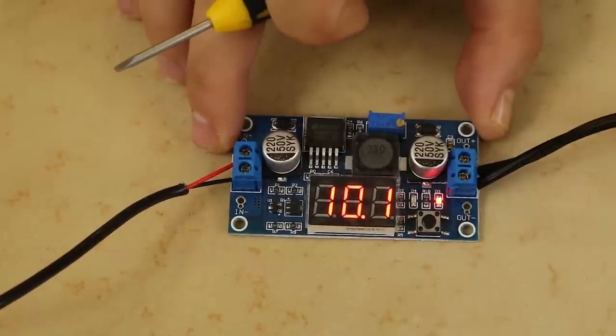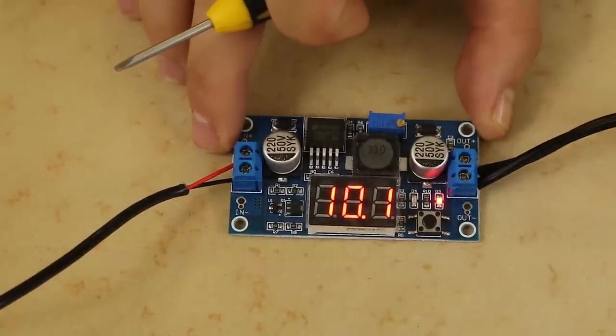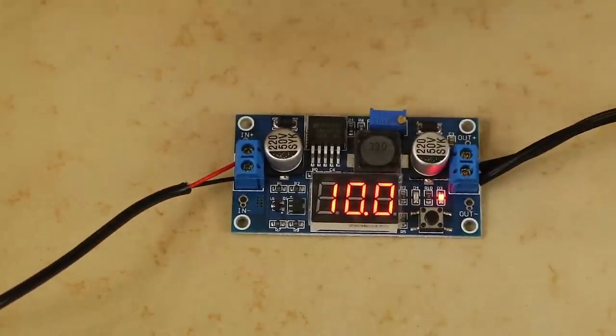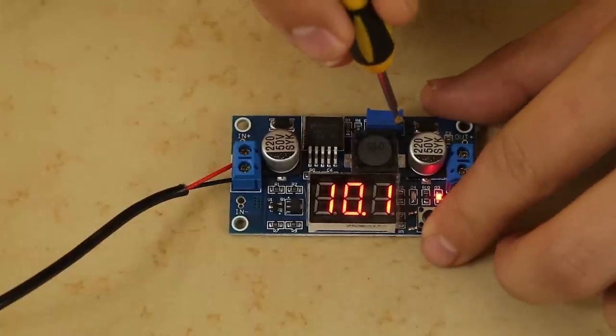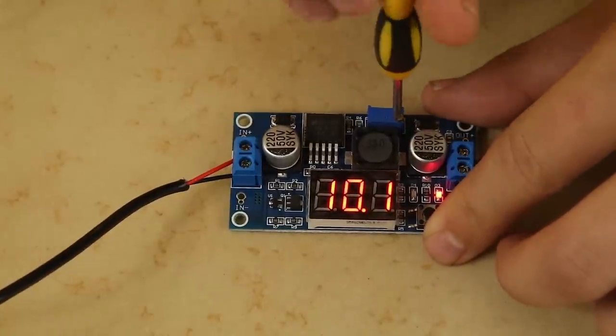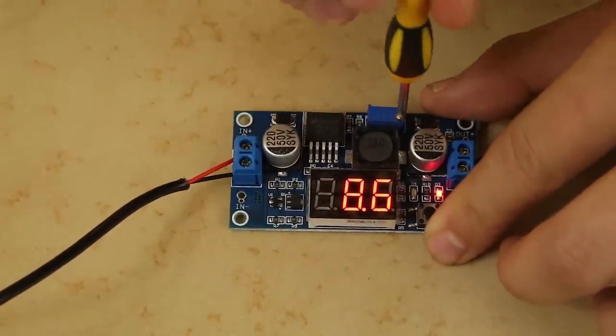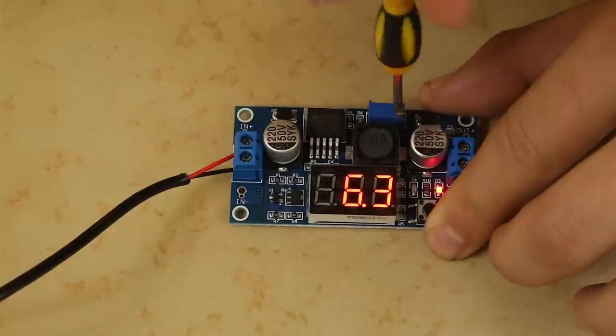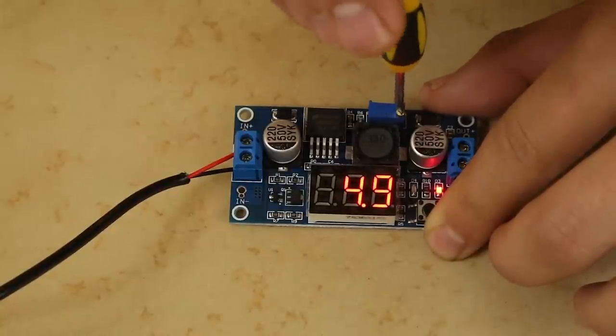You've got a button right there which changes between your input voltage and your output voltage. You'll see right now it's set to 10 volts. We can go ahead and turn this and you can see we can start reducing our voltage. We can bring it all the way down to about 5 volts or so, that's the minimum, 4.9.